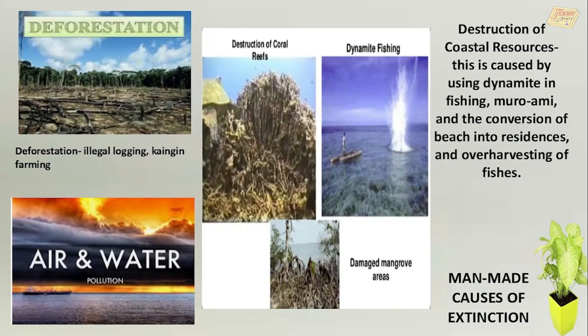Some man-made causes of extinction are deforestation, which includes illegal logging and kaingin farming. Destruction of coastal resources, caused by using dynamite in fishing, muro-ami, and the conversion of beaches into residences and over-harvesting of fishes.